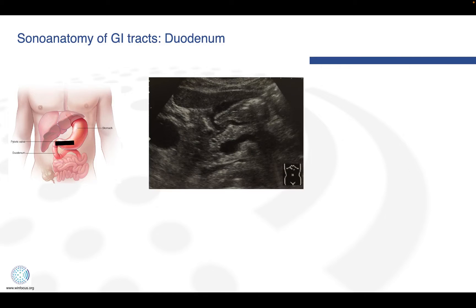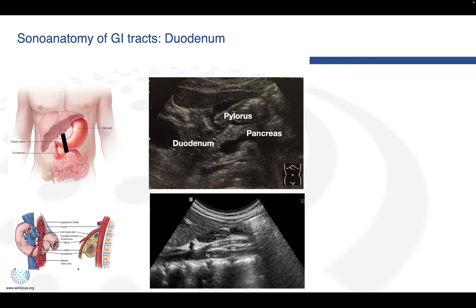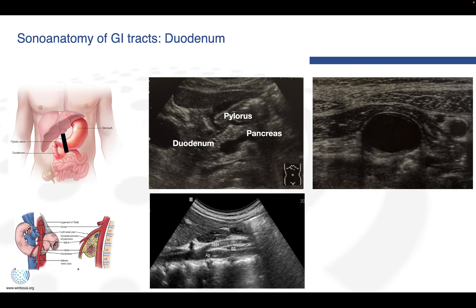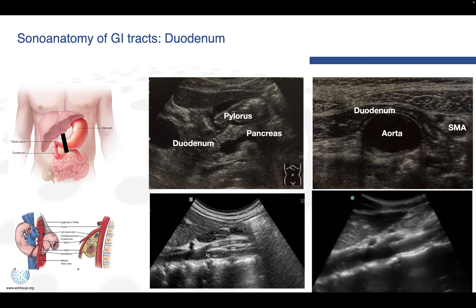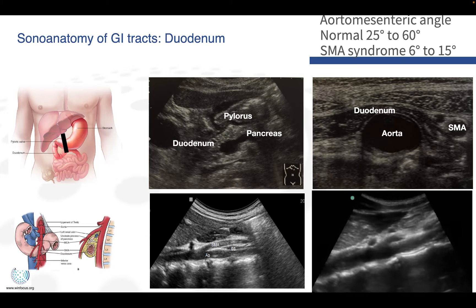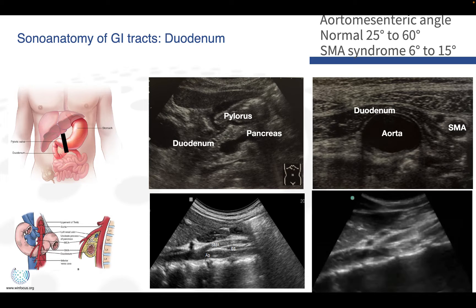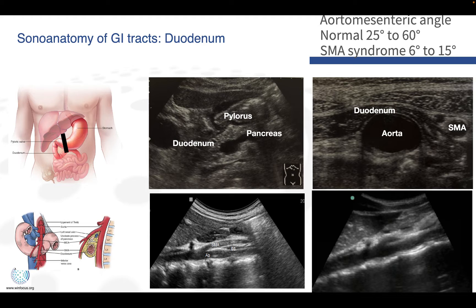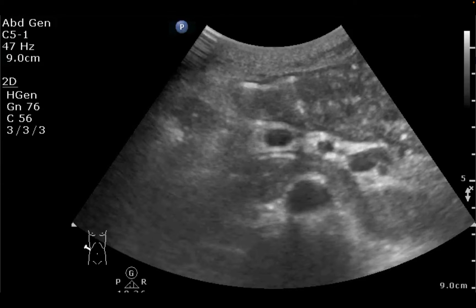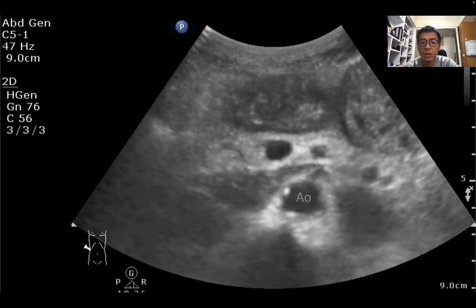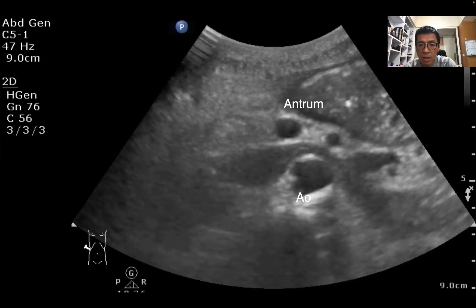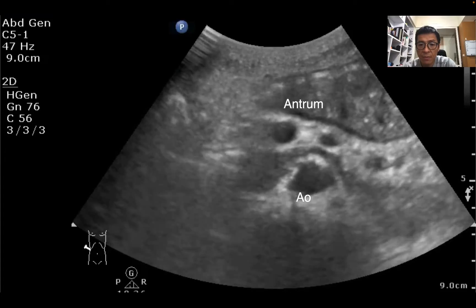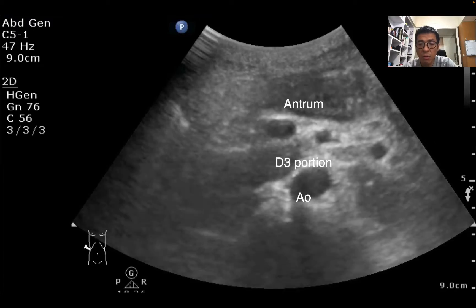The next GI structure goes to the duodenum. We can start with a transverse scan from pylorus to duodenum. You can also rotate the transducer sagittally to observe the third portion in between the SMA and aorta. When you have patients with a distended stomach and duodenum, you should observe the angle between the SMA and aorta. If the angle is smaller than it should be, you should consider the patient may have SMA syndrome. We can see the typical landmark — aorta and antrum, and the GI structures passing in between the aorta and SMA is the third portion of the duodenum.